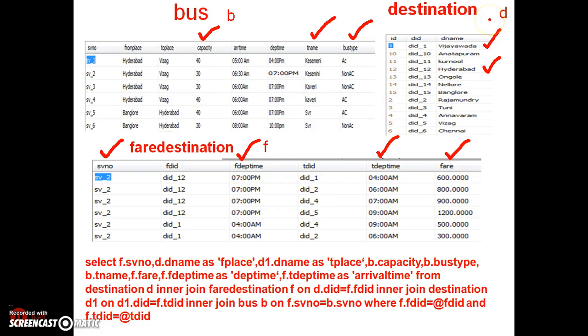One more interesting point you need to understand: I have given two alias names for the destination table — one is D, the other one is D1.